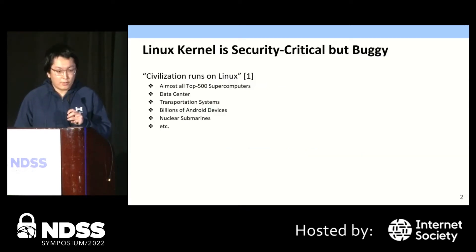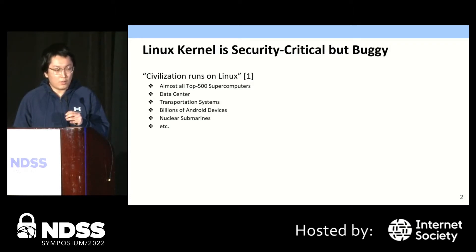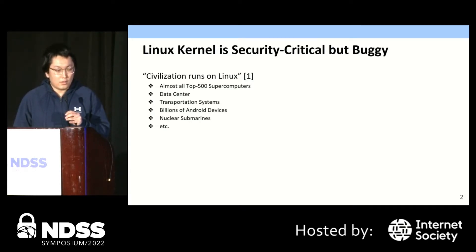Out of doubt, the operating system kernel is very important. As it's said that civilization runs on Linux — almost all top supercomputers run on Linux. Many data centers and transportation systems heavily use the Linux kernel. The Android system, which is a Linux derivative, constructs the foundation of mobile computing. Nowadays, even military weapons and the international space station also have Linux kernel running in their systems.